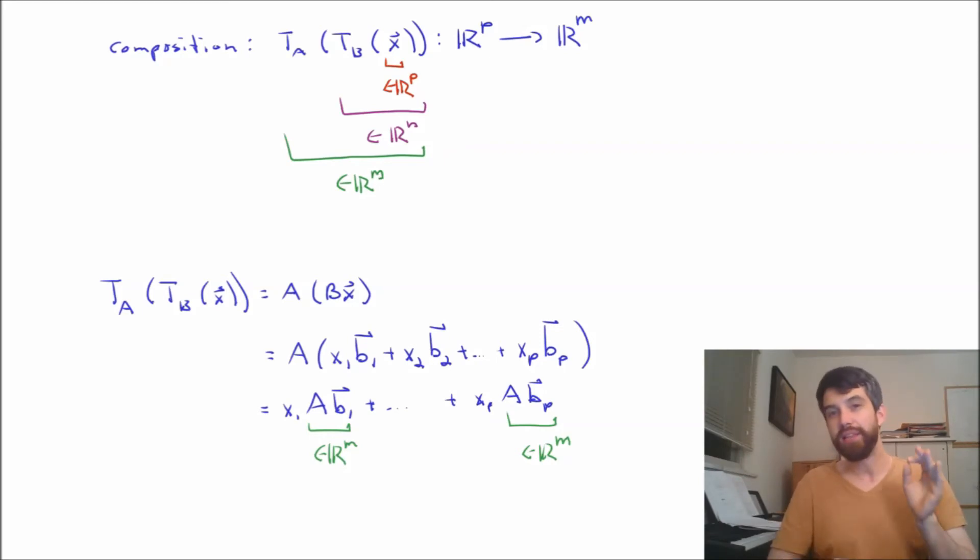And as we've already seen, a linear combination of vectors is a definition for a matrix vector product. Indeed, this is, by the definition of a matrix vector product, the matrix that has columns AB_1 all the way down to AB_p. That's some matrix and it has those columns, those different vectors, all multiplied by the vector x.